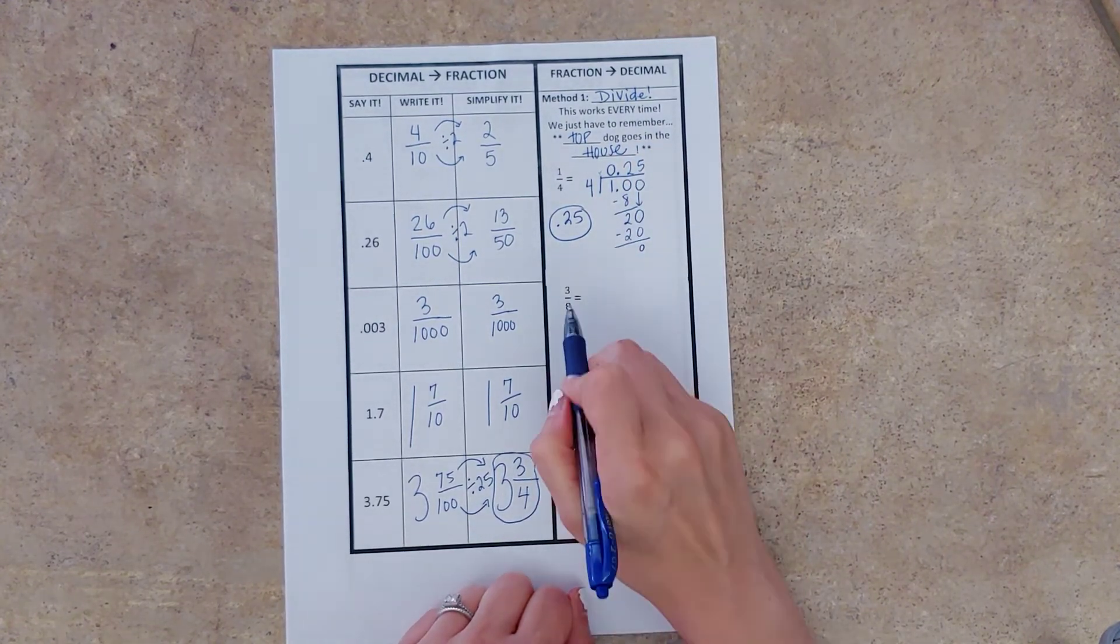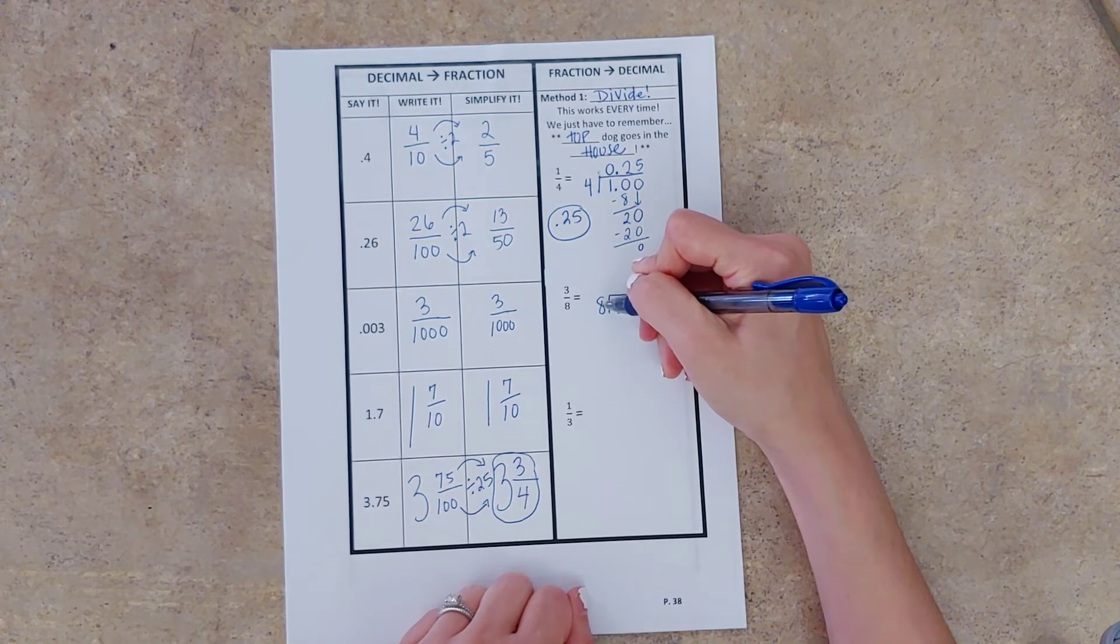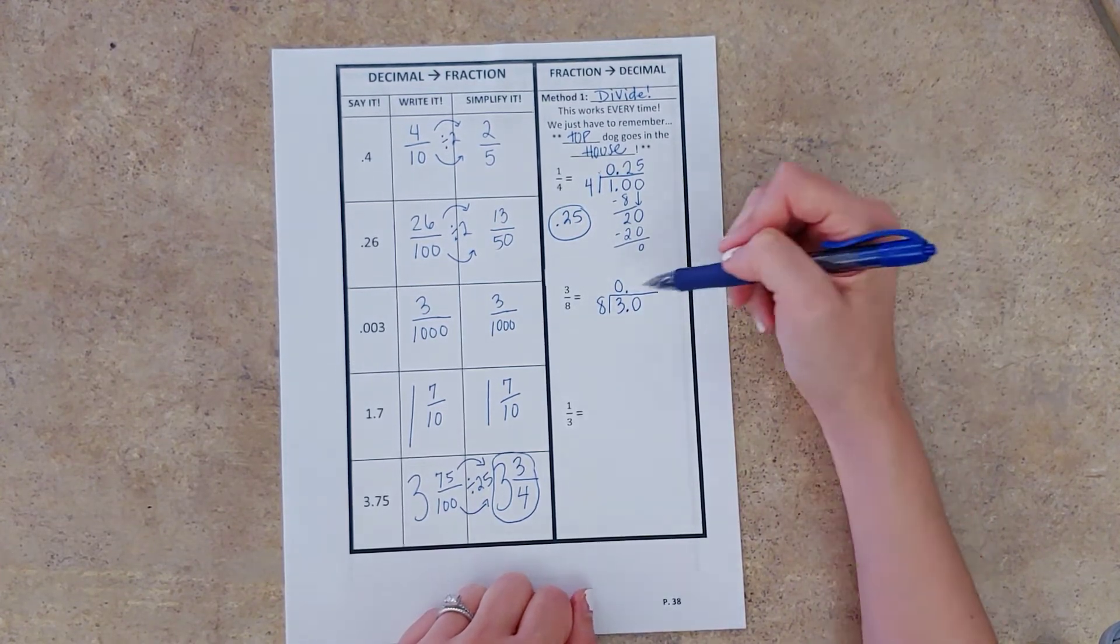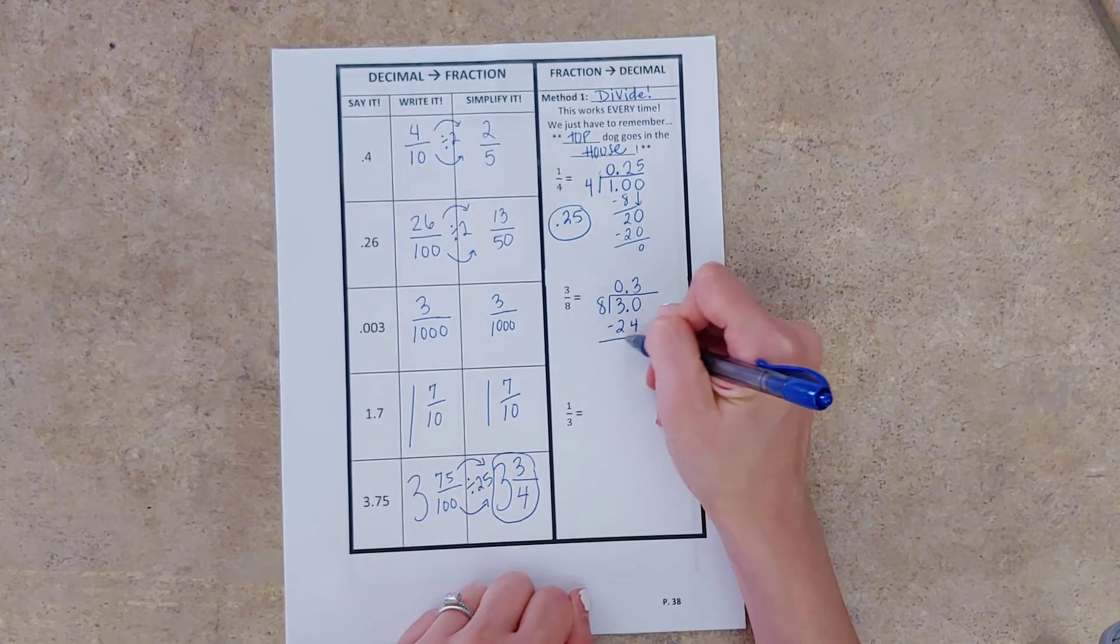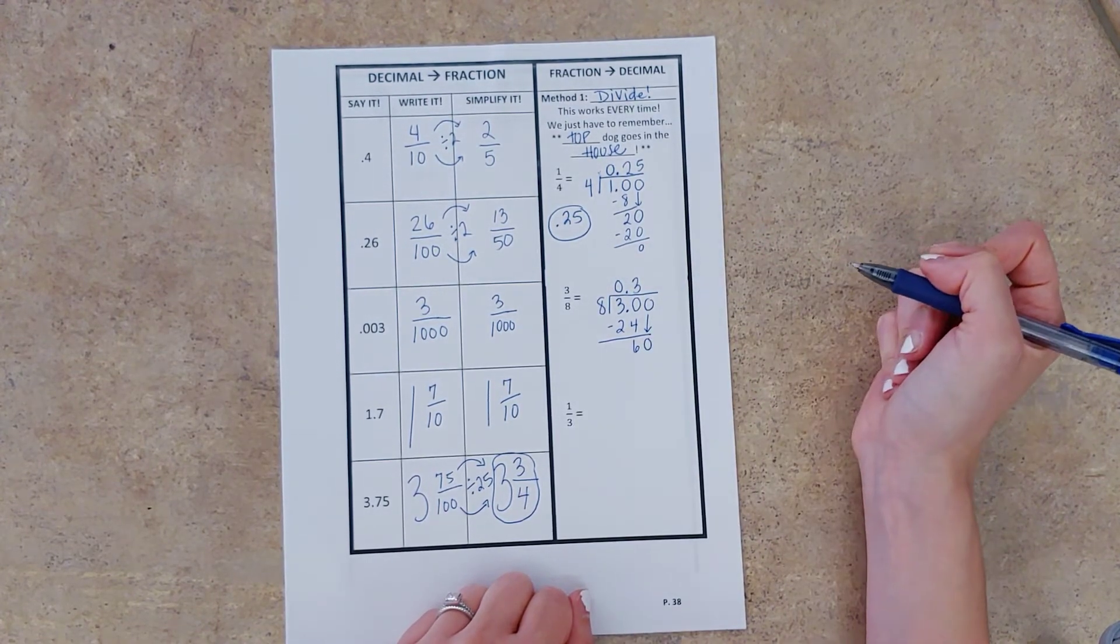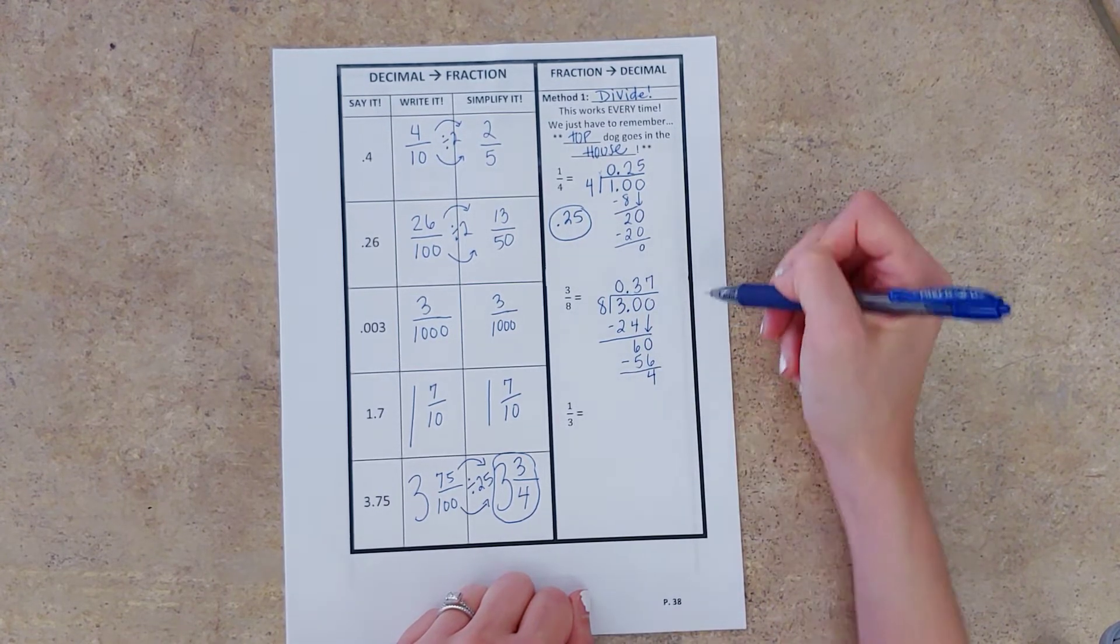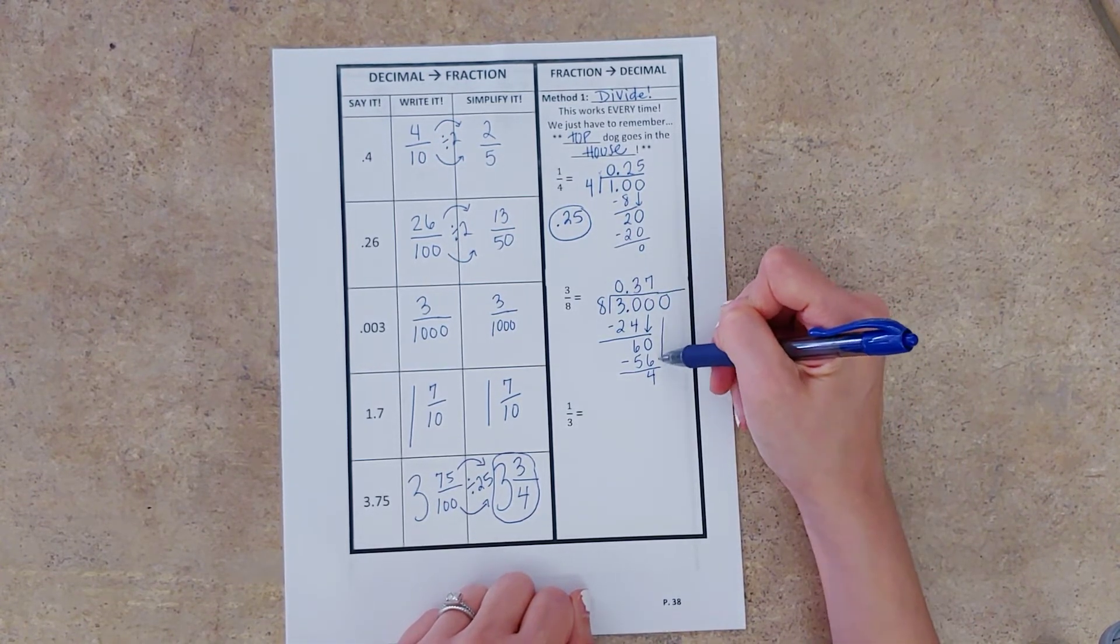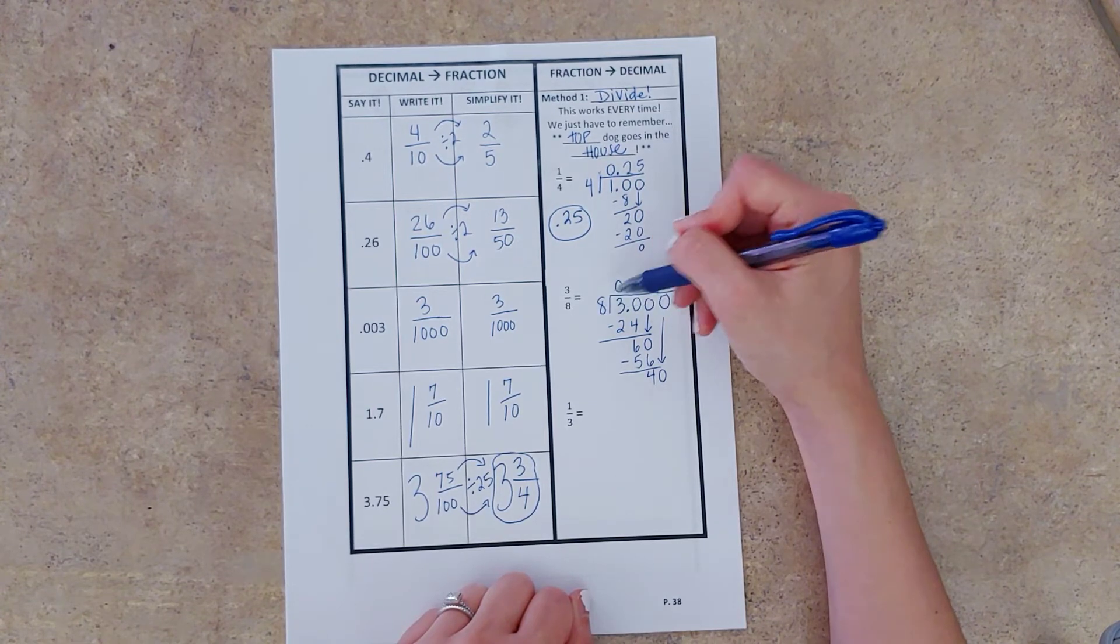All right, same thing for our next one. Three over eight. Our top dog goes in the house. Our denominator goes at the door. And then we just divide. Eight goes into three zero times. We're going to add that decimal and a zero so we can keep dividing. All right, eight goes into thirty three times. Thirty minus twenty-four gives us six. Well, we're going to have to add another zero. All right, so eight goes into sixty seven times. That gives us fifty-six. Wow, we still have a remainder. And I don't see a pattern yet, so I'm going to add another zero. We usually are going to stop when we get to three decimal places. We don't want to keep dividing for eternity. So we stop when we have no remainder left over or we start to see a pattern or we just get to three decimal places.